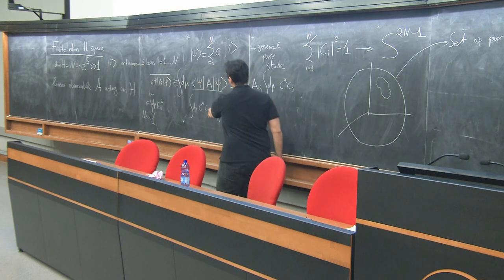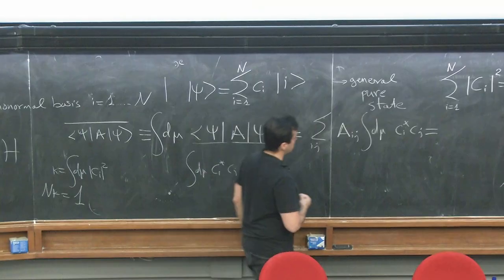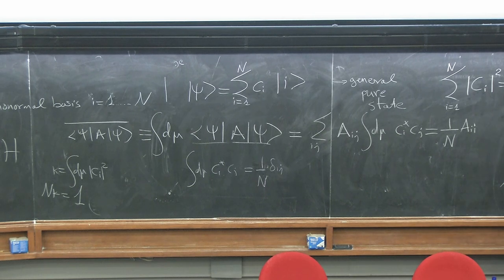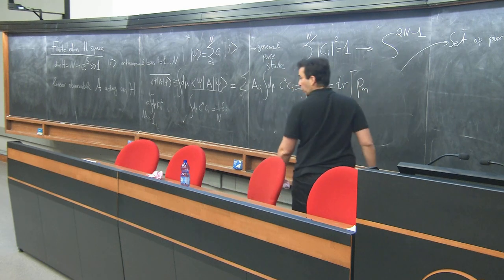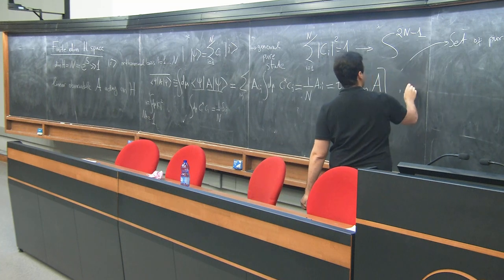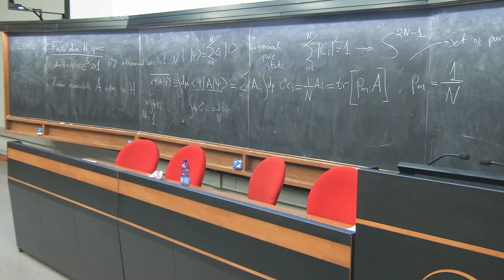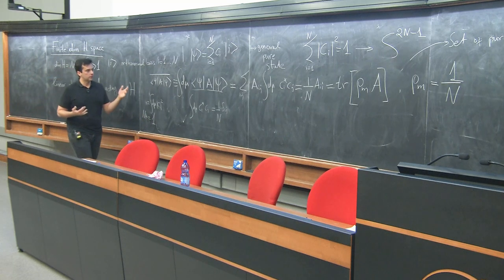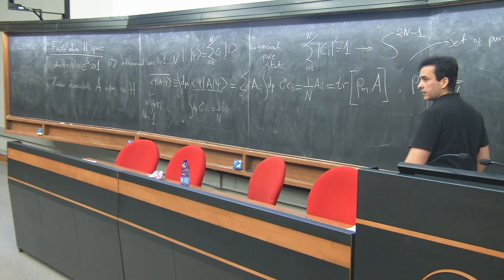Plugging this back in, the average expectation value is (1/N) Σ_i A_{ii} = (1/N) Tr(A) = Tr(ρ_m A), where ρ_m = 𝟙/N is the microcanonical density matrix. So the average over all possible pure states of ⟨ψ|A|ψ⟩ is exactly equal to the expectation value of A in the maximally mixed microcanonical state.